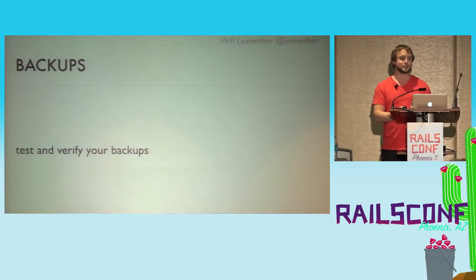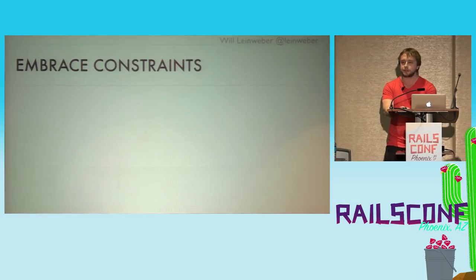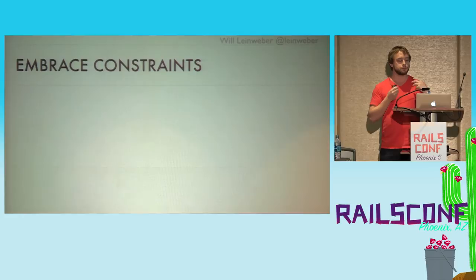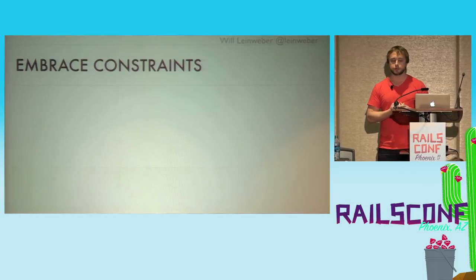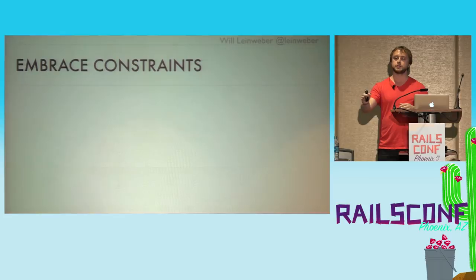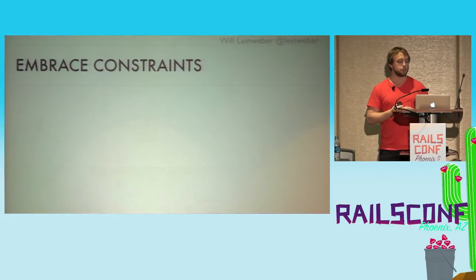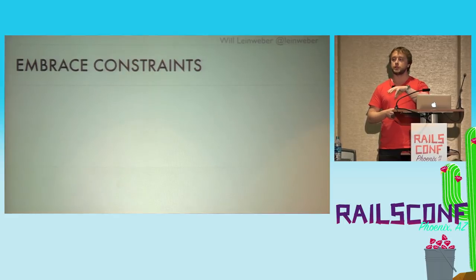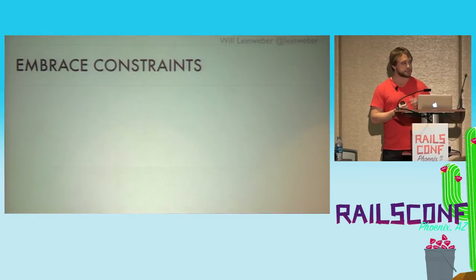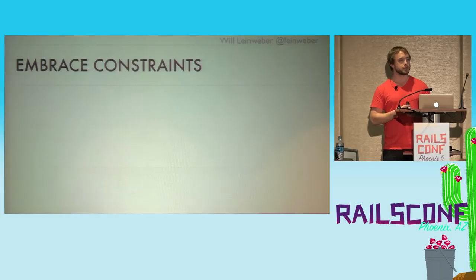The main thing I think is interesting about Postgres at small size is that you can embrace the constraints it allows you to have. It has a huge number of constraints you can opt into. What I like to think about is that you get to enforce the assumptions you have about your data. If you think a field like login count will always be a positive number, Postgres lets you enforce that at the database level — not just as assumptions in your code. This is really the best bang for the buck you can get out of Postgres, and I don't think people think about it as an advantage as much as they should.